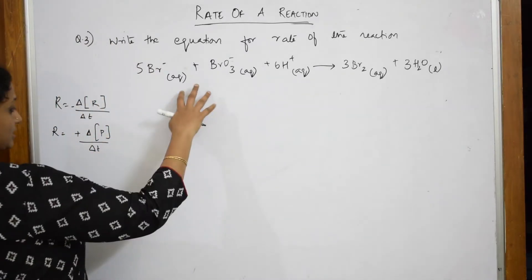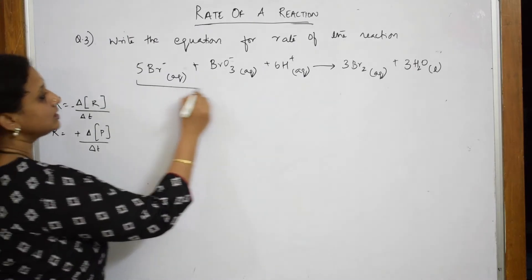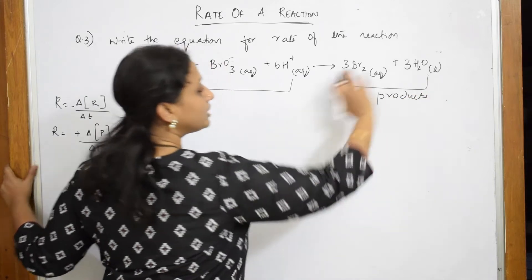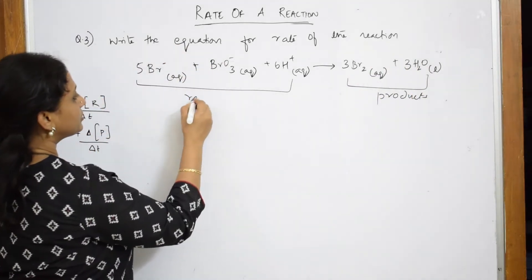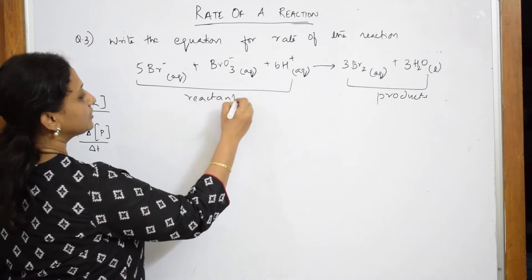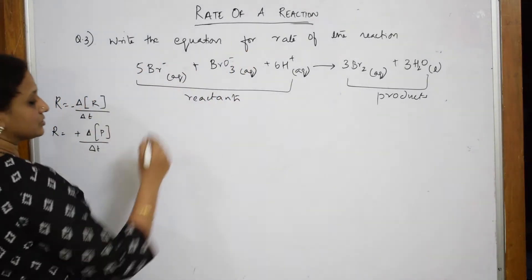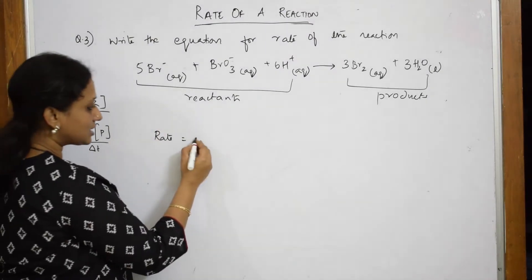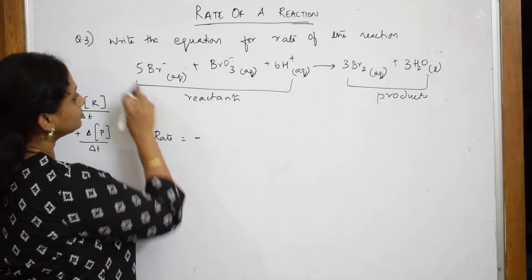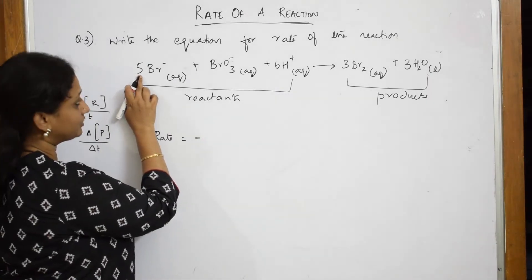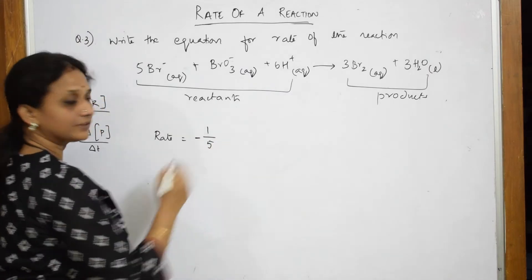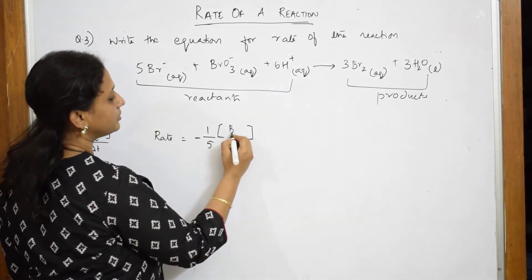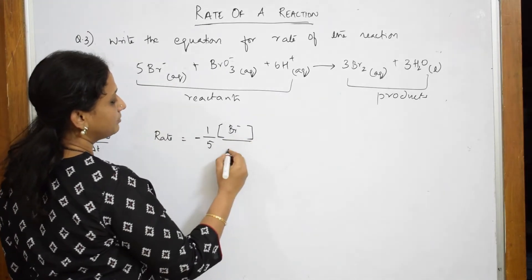So let us write. When such a reaction is given to you, nothing to do — we very well know all these are reactants and all these are products. Wherever you find the products, try to put plus, and for the reactants, try to put minus. For this I have to write just the equation. Rate of reaction is equal to — because you are starting with the reactants, start with minus. We have the coefficient of this, so this becomes 1 by 5. Concentration of BRˉ divided by delta T.